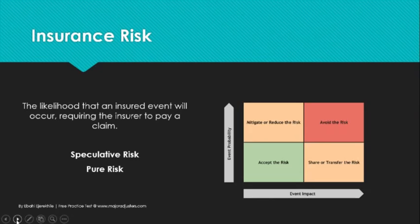Insurance risk is the likelihood that an insured event will occur, requiring the insurer to pay a claim. You have two types of risk: speculative and pure risk. When you look at pure risk, there are different categories, but we're going to stay top level here and just define the difference between speculative and pure risk.